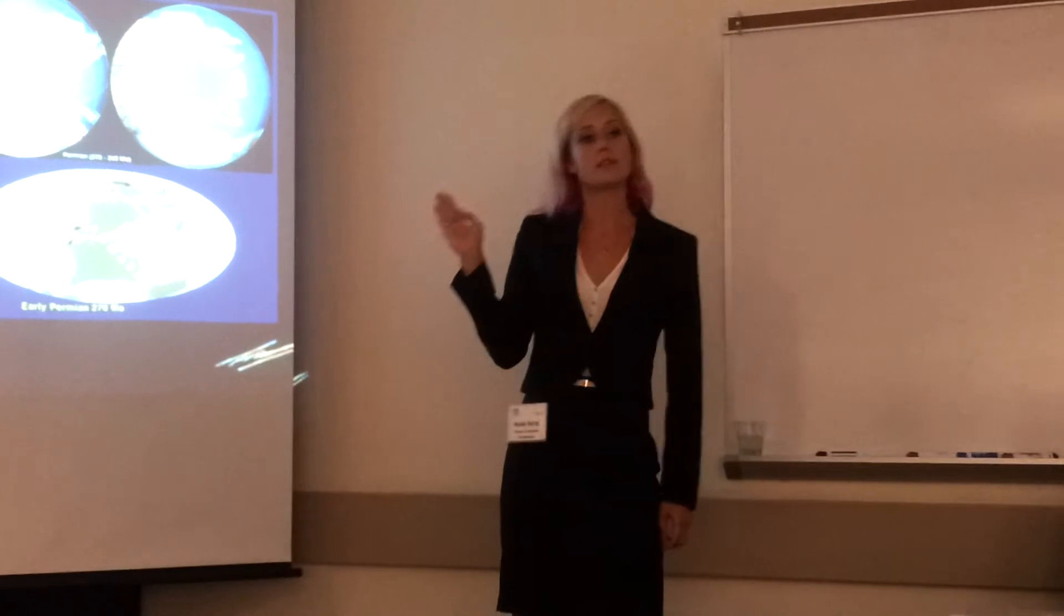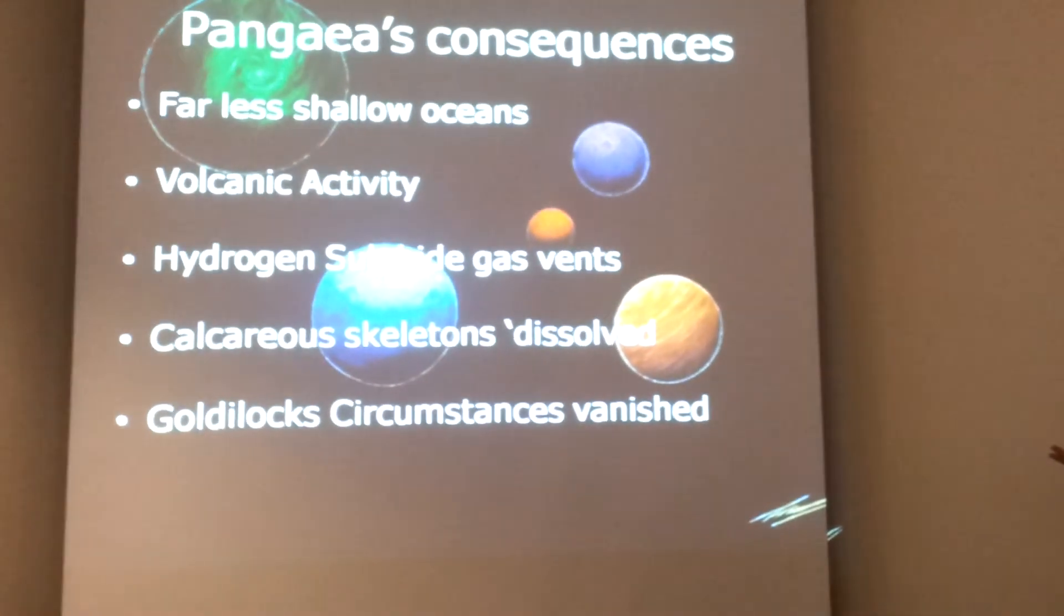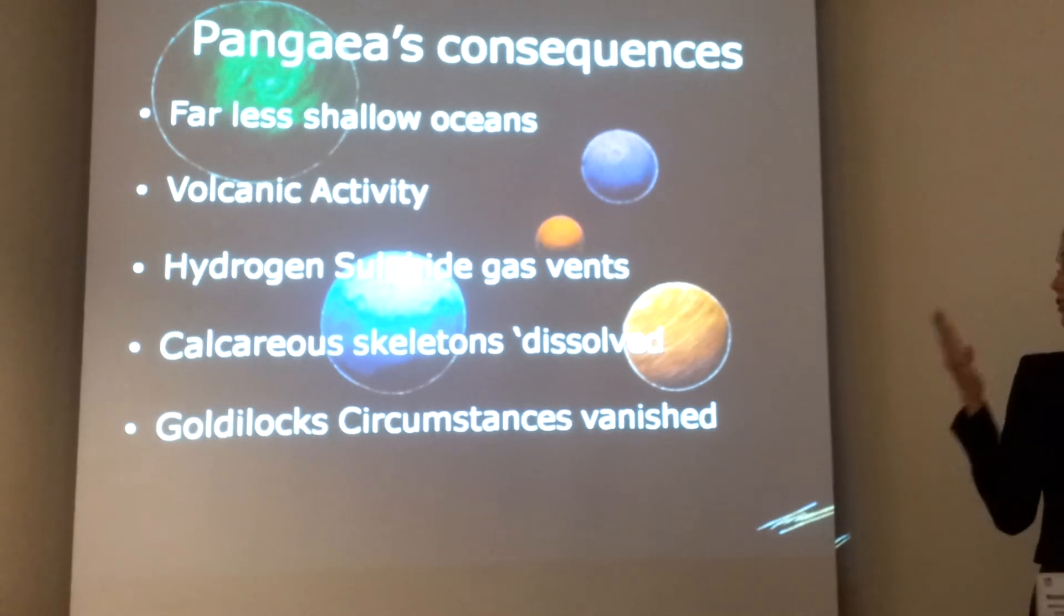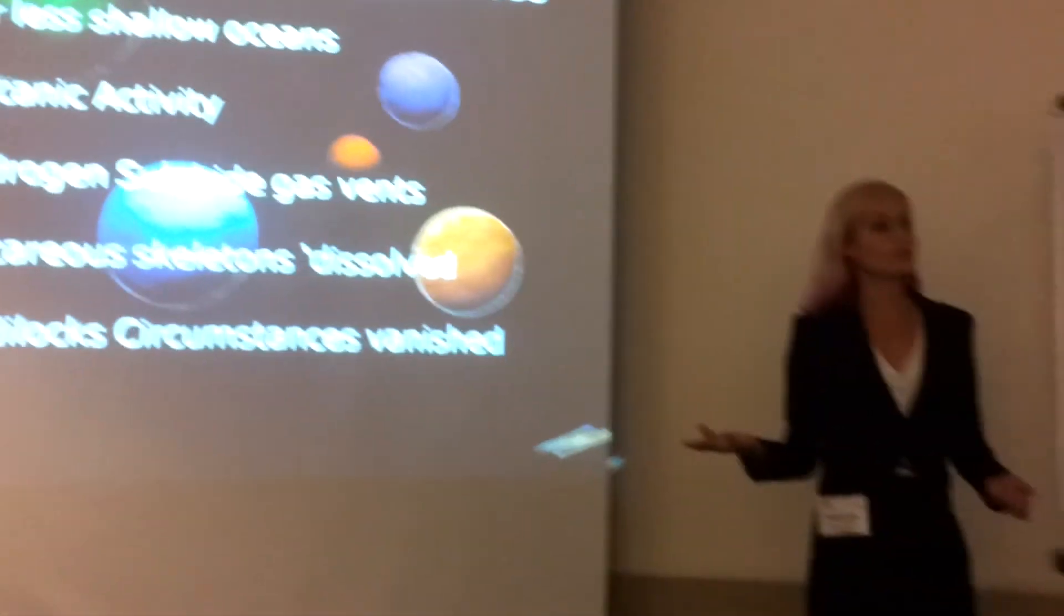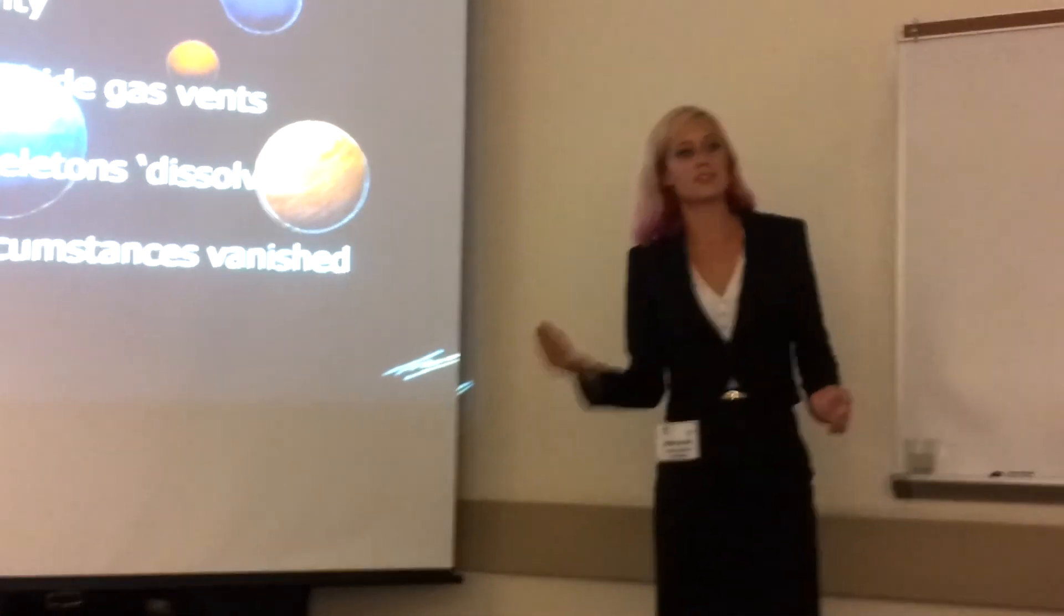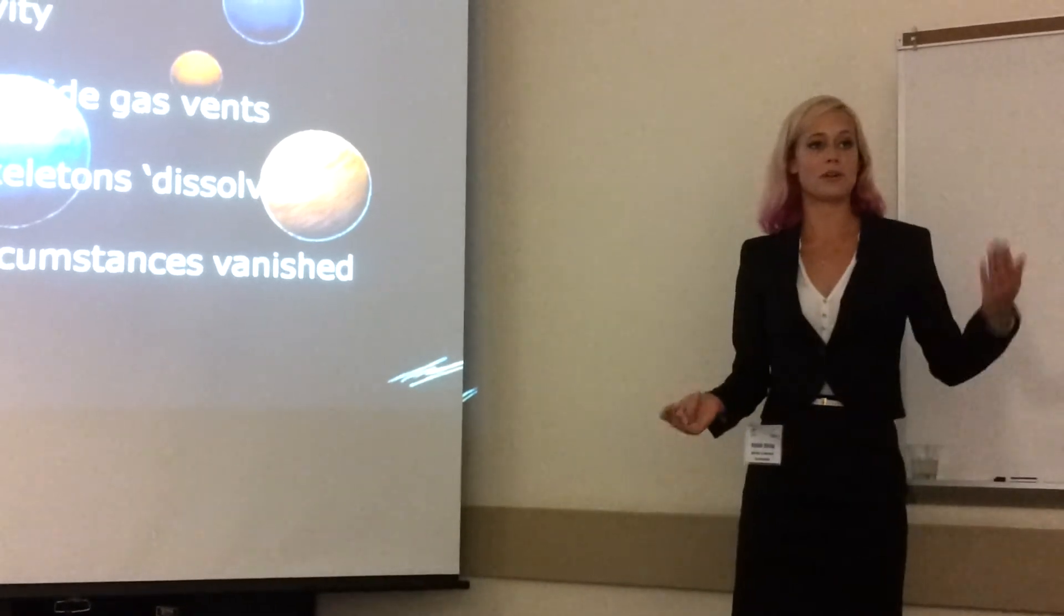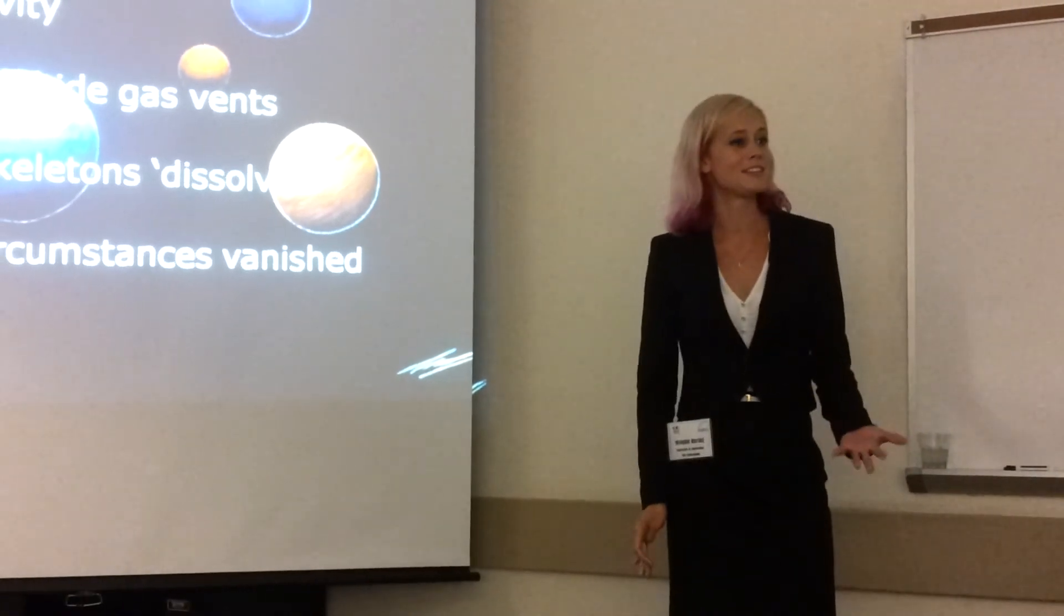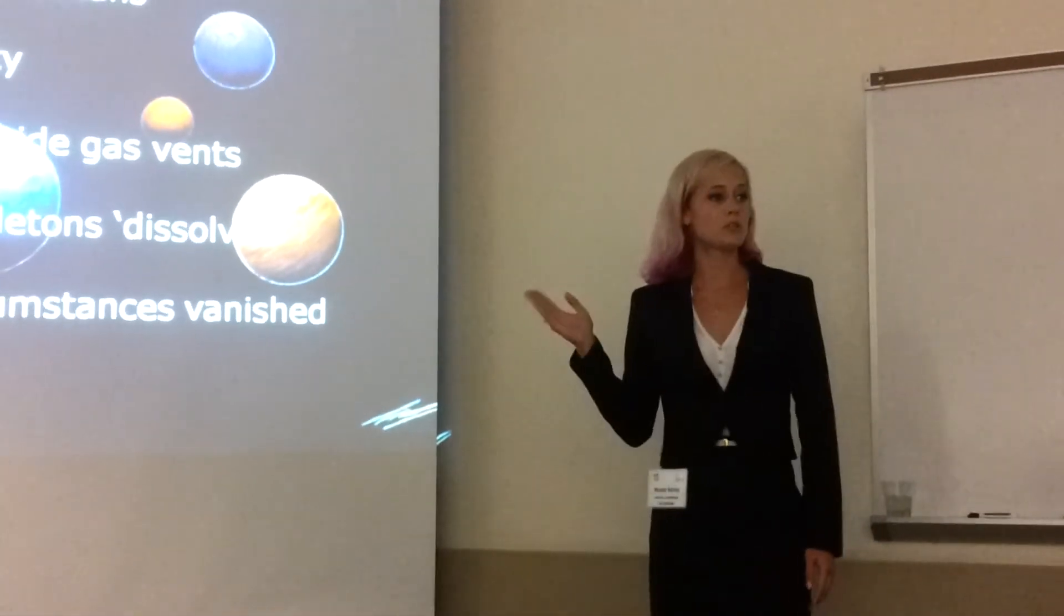But this actually didn't matter that much because, like I said, they also filled the niches in the deeper oceans. So, what did matter then? Well, if all the continents are moving, you're going to get massive volcanic activity. And that meant that we had a hydrogen sulfide gas vent in the ocean floors that actually acidified our oceans. And trilobites made their skeletons out of calcerous material. So, that doesn't respond very well to the lowering of the pH of the water they swam in. So, they started to be unable to build their own skeletons. Yeah, that pretty much means a lot for an organism.